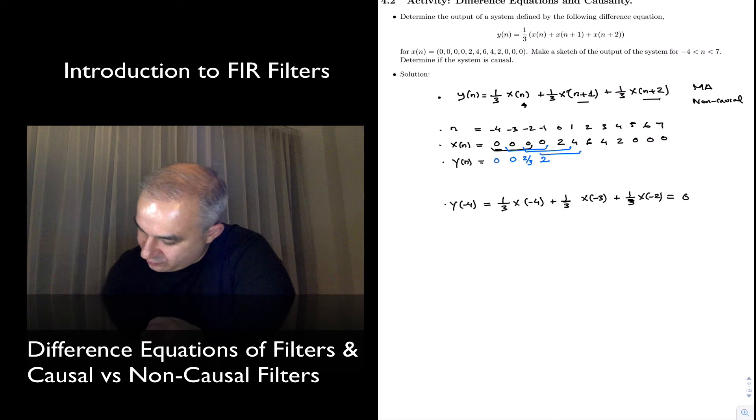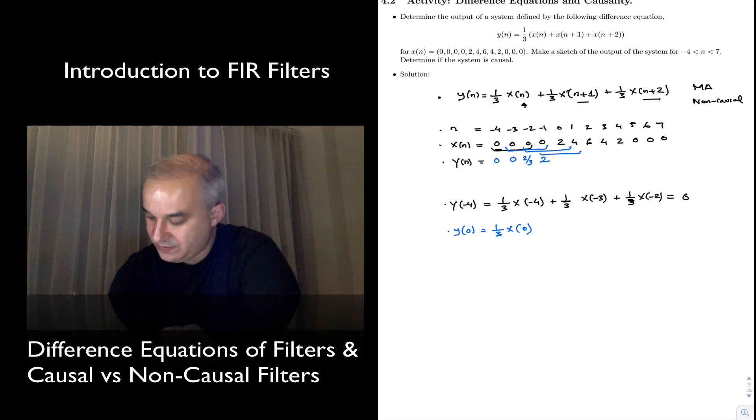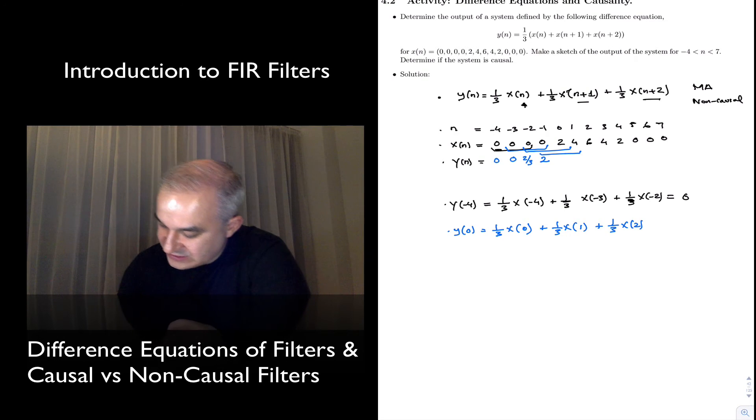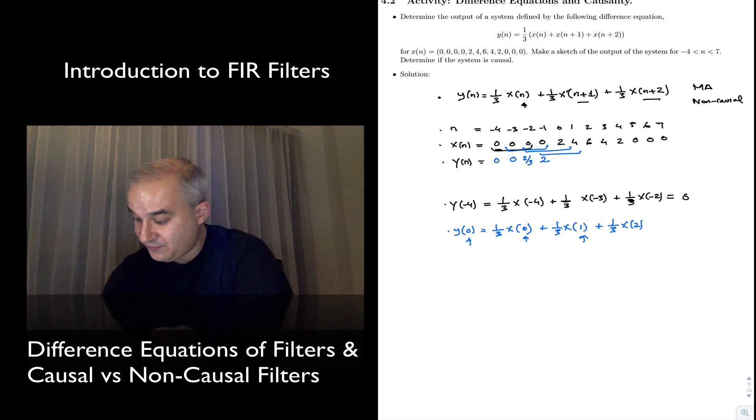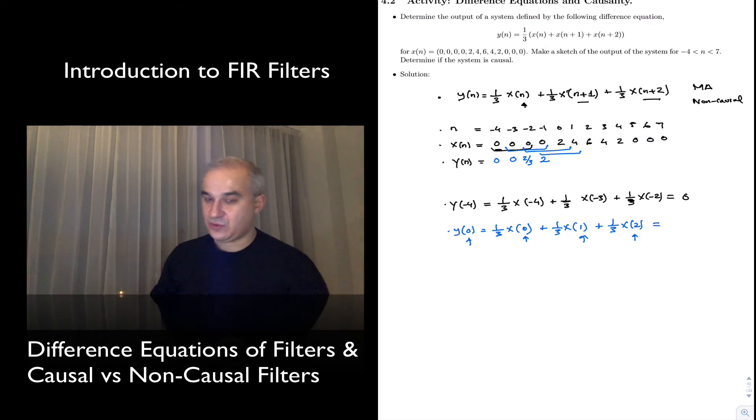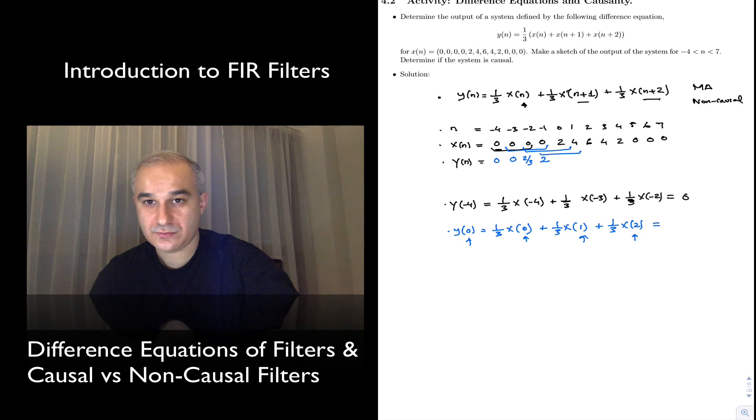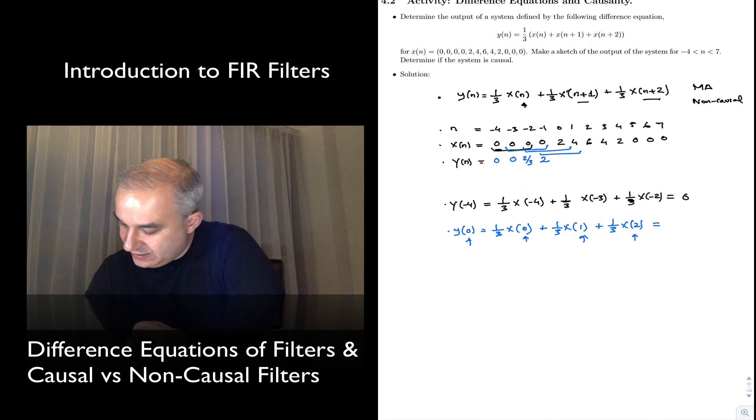Let's do another one here for y equals 0. For y equals 0, we have 1/3 of x of 0, just to illustrate it, plus 1/3 of x of 1 plus 1/3 of x of 2. Notice, for the value 0, we have the present input, but future inputs here, right? And this is equal to x of 0, which is 2, 1/3 times 2, plus x of 1, 4, plus x of 2, 6. So, we have 12 over 3, or 4.